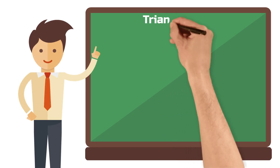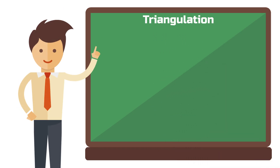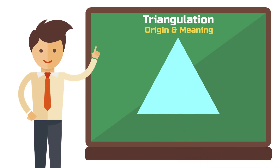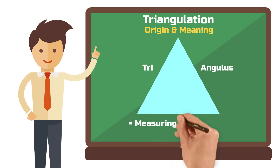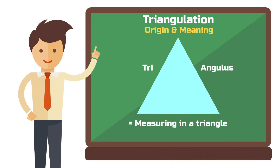And now without further ado, welcome to Schrei! You can easily derive the meaning of triangulation from Latin. Tri means three and angulus means angle.